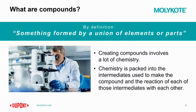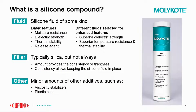So what are compounds? By definition, a compound is something formed by union of elements or parts. Creating compounds involves a lot of chemistry. There's chemistry in the intermediates, and then in reactions within those intermediates, there's additional intermediates — things that you don't even see at the final product level. So what is a silicone compound? Silicone compounds are what Molyco specializes in. It's made up of a fluid, a filler, and sometimes there are additional additives as well.